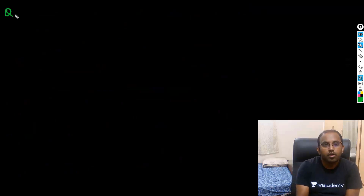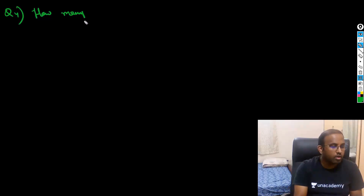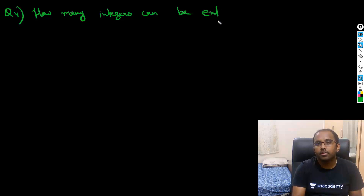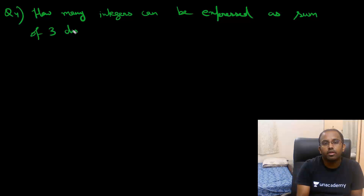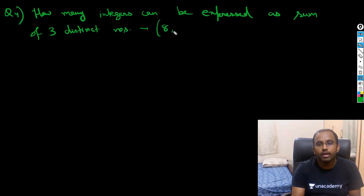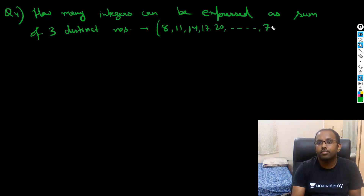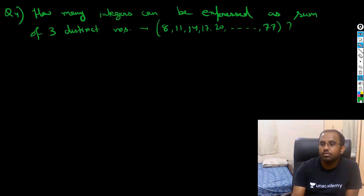Question for you. This question says: how many integers can be expressed as the sum of three distinct numbers from a set — 8, 11, 14, 17, 20, and it goes on to 77. So how many numbers can be expressed in this form, as the sum of three distinct numbers from this set?